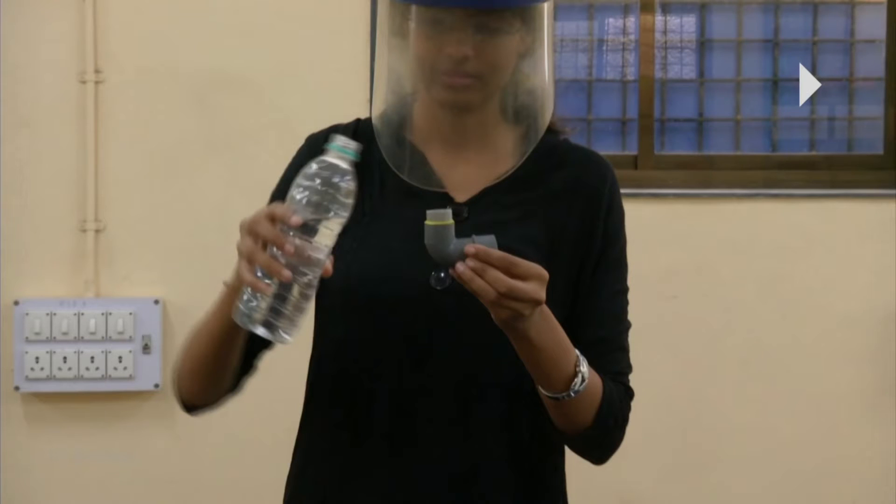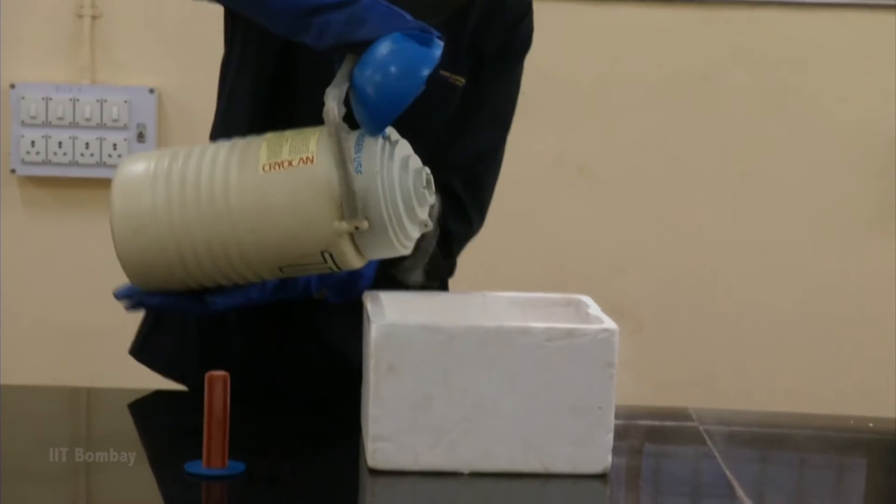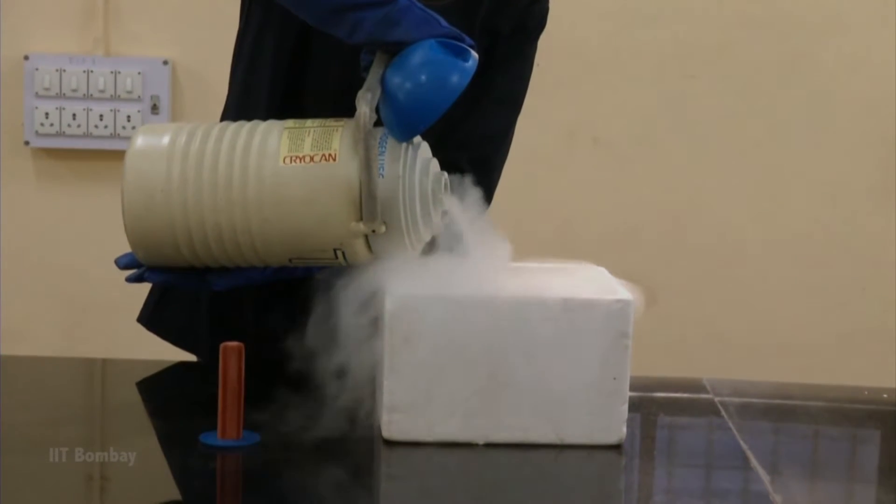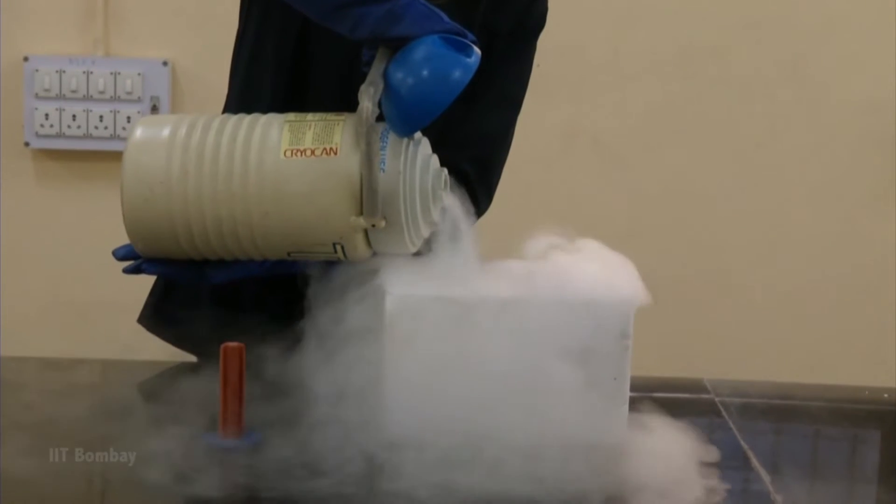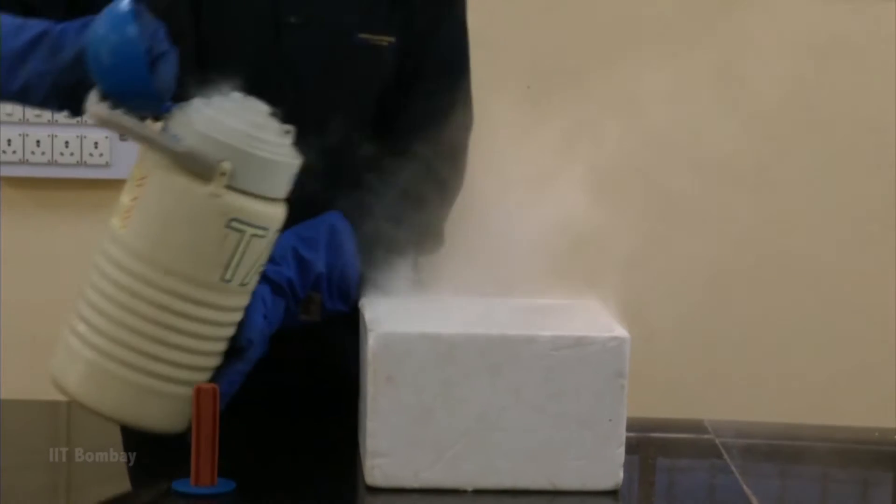Liquid nitrogen as you know exists at minus 196 degrees centigrade or about 77 Kelvin. This is liquid nitrogen. If you transfer it from a specially made container of liquid nitrogen into a thermocol container, you can see that it looks like water only and it is getting evaporated.